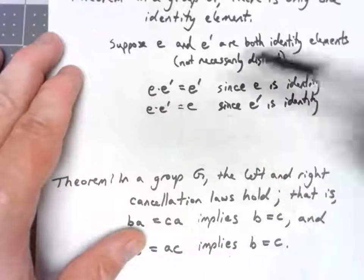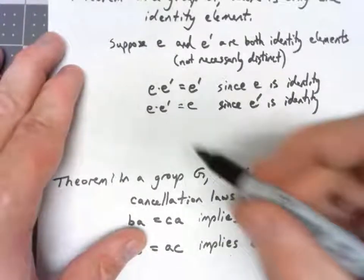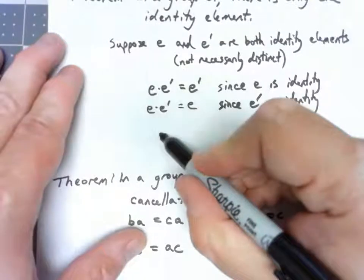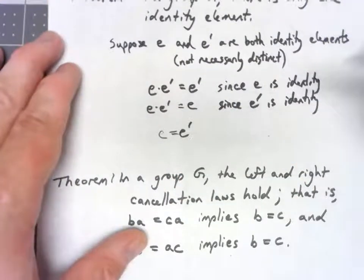is E', but E times E' is also E. That means that E and E' are really the same thing. That means there can only be one identity element.